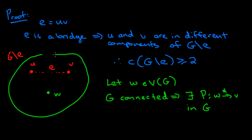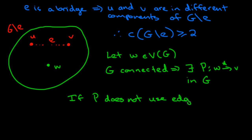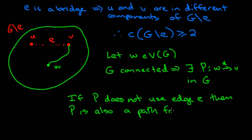The graph G is the whole graph together with the edge E. There are two choices: either the path P contains the edge E, or it does not. If P does not use edge E, then it goes somehow to V without using edge E. So P is also a path from W to V in G without the edge E. That means W is in the same component as V.